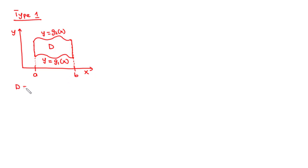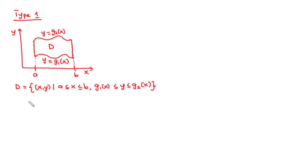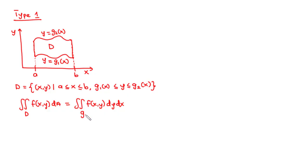The bottom function is given by y equals g1 of x and the top function by y equals g2 of x. The region D is the set of all ordered pairs (x, y) such that a ≤ x ≤ b and g1(x) ≤ y ≤ g2(x). The double integral over region D equals the integral from a to b on the outside and from g1(x) to g2(x) on the inside, integrating dy dx. A plane region D is of type 1 if it lies between the graphs of two continuous functions of x.